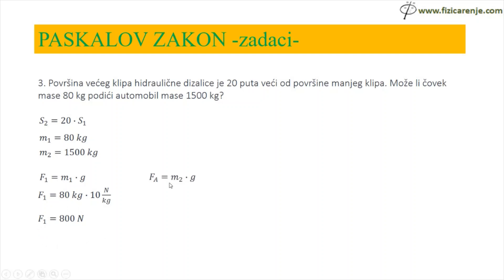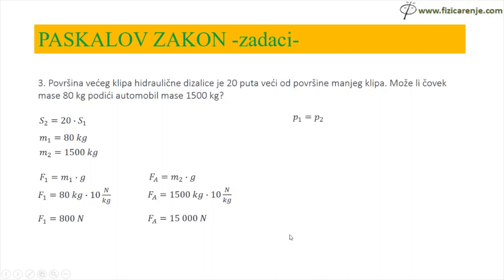Na isti način mogu dobiti i težinu automobila. Kada mi je poznata masa, mogu dobiti težinu automobila po obrascu F2 je jednako M2 puta G. Umjesto M2 pišem 1500 kg, a G je 10 N/kg. 1500 puta 10 je 15.000, kilogram se skrati i ostaje samo N. Ovo je težina automobila. Sada mogu da vidim koliku težinu čovek može da podigne — to ću uraditi tako što izjednačim pritiske.